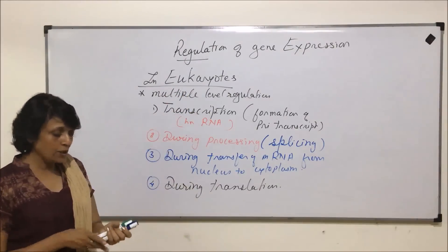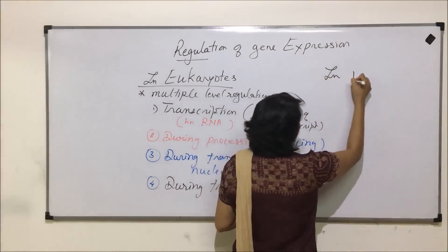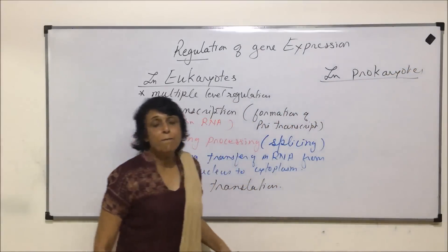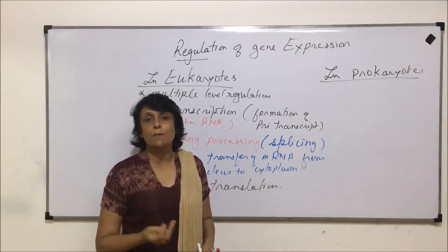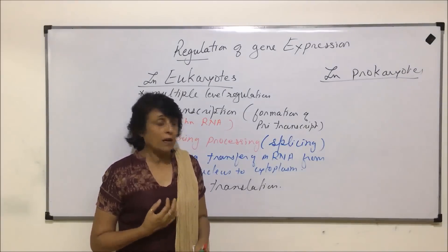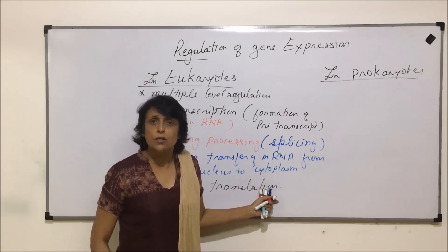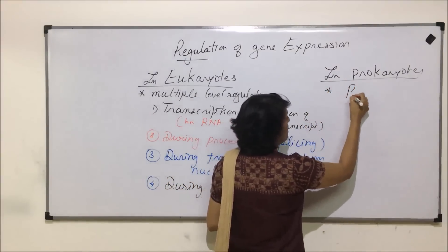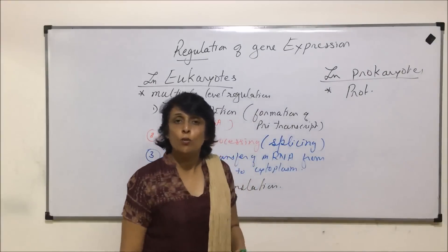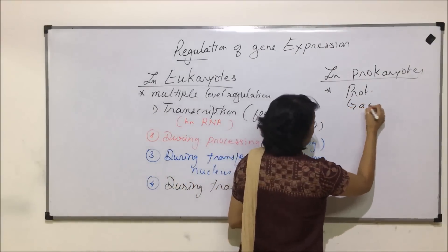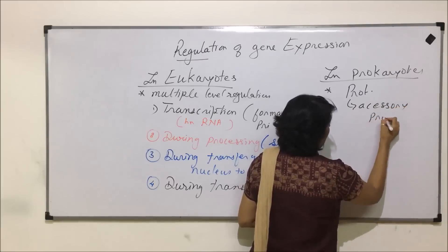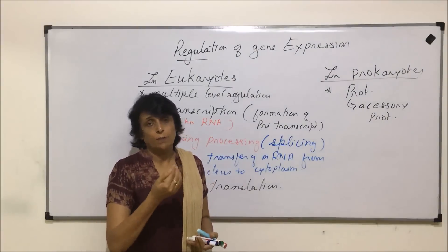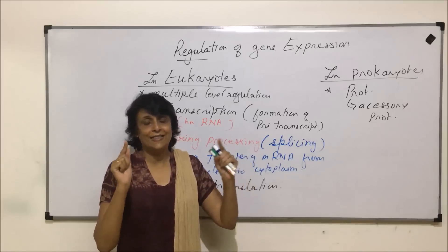In prokaryotes, gene expression can be regulated by many things — it can be environmental factors, availability of resources, and so on — but one major factor is that it is regulated by a protein, which is normally termed as an accessory protein.